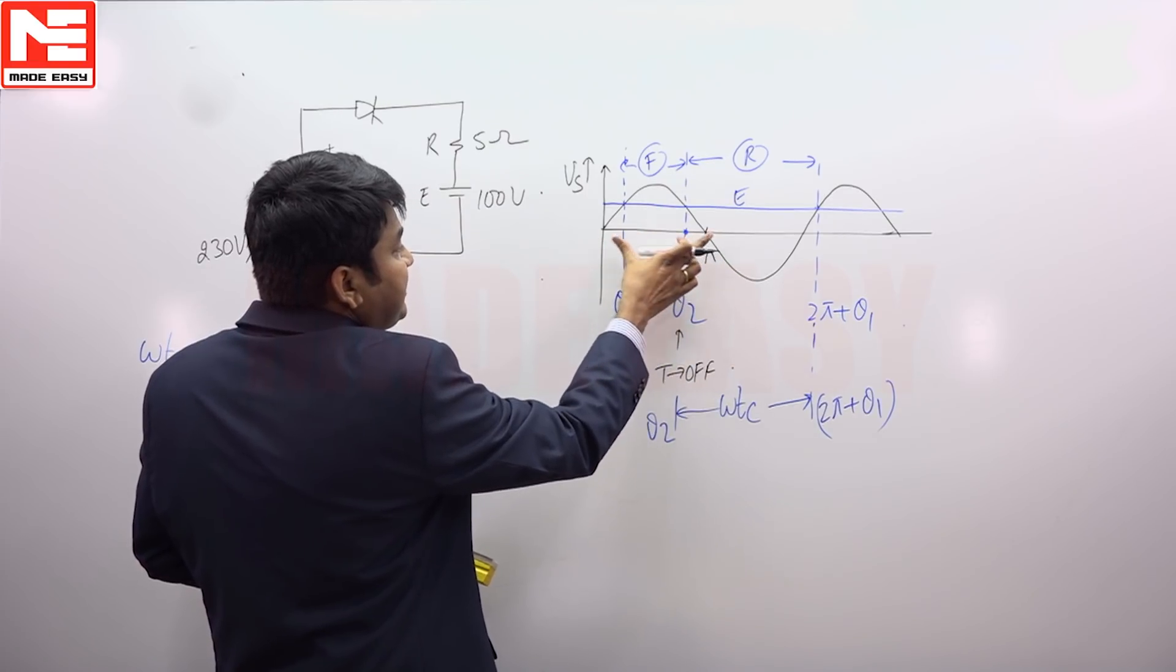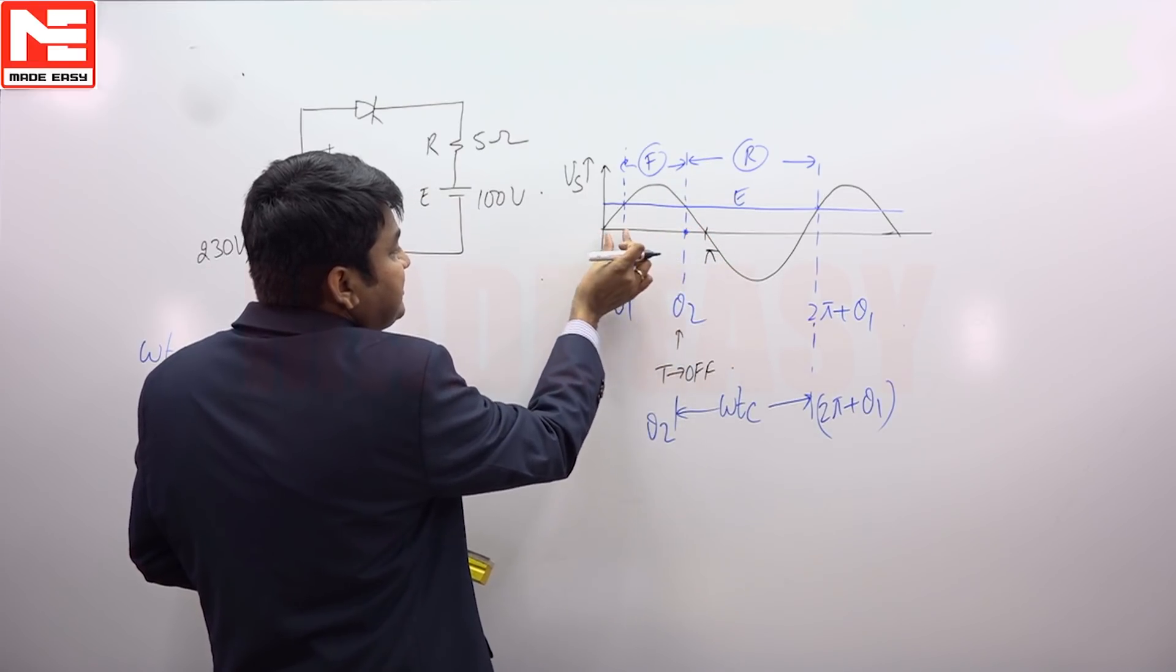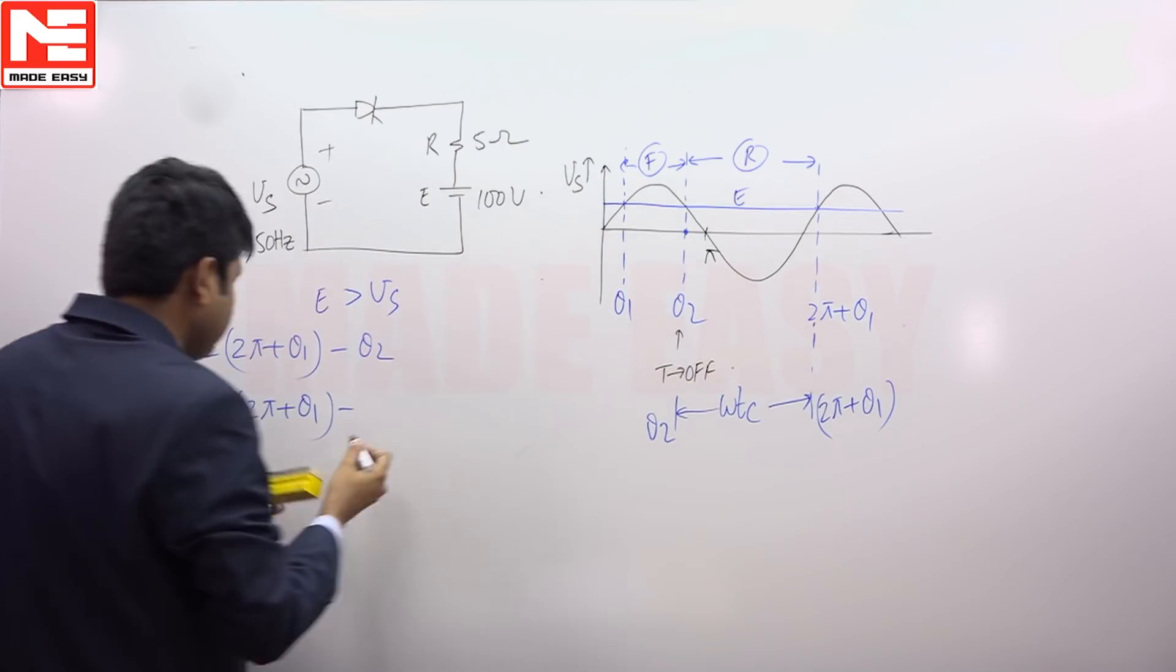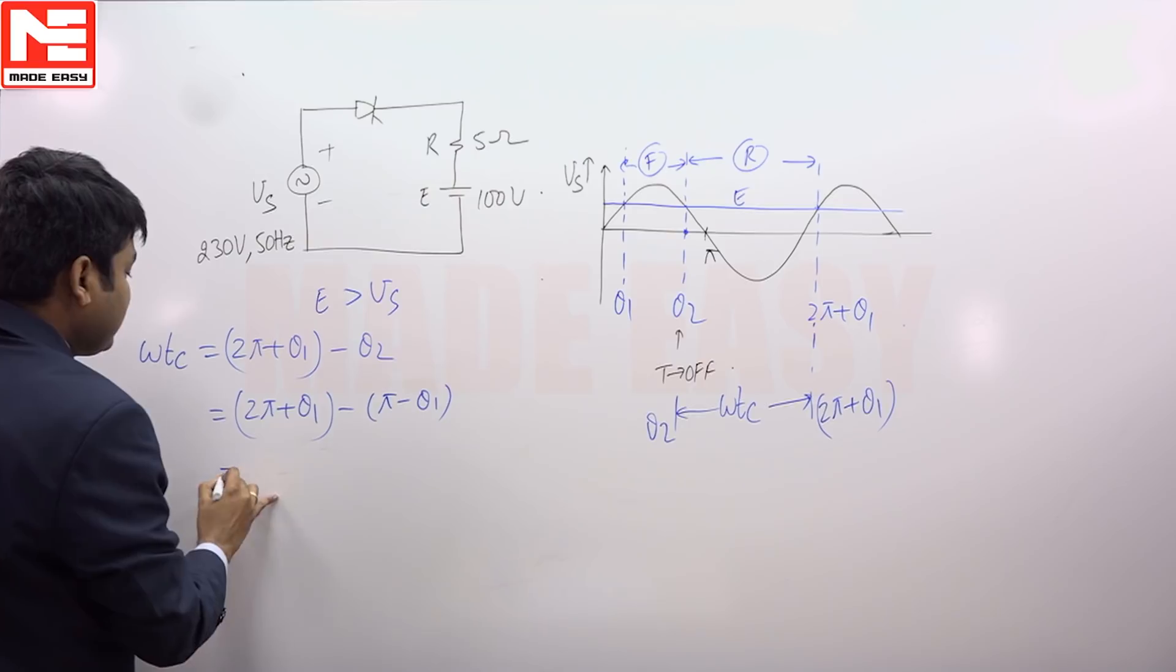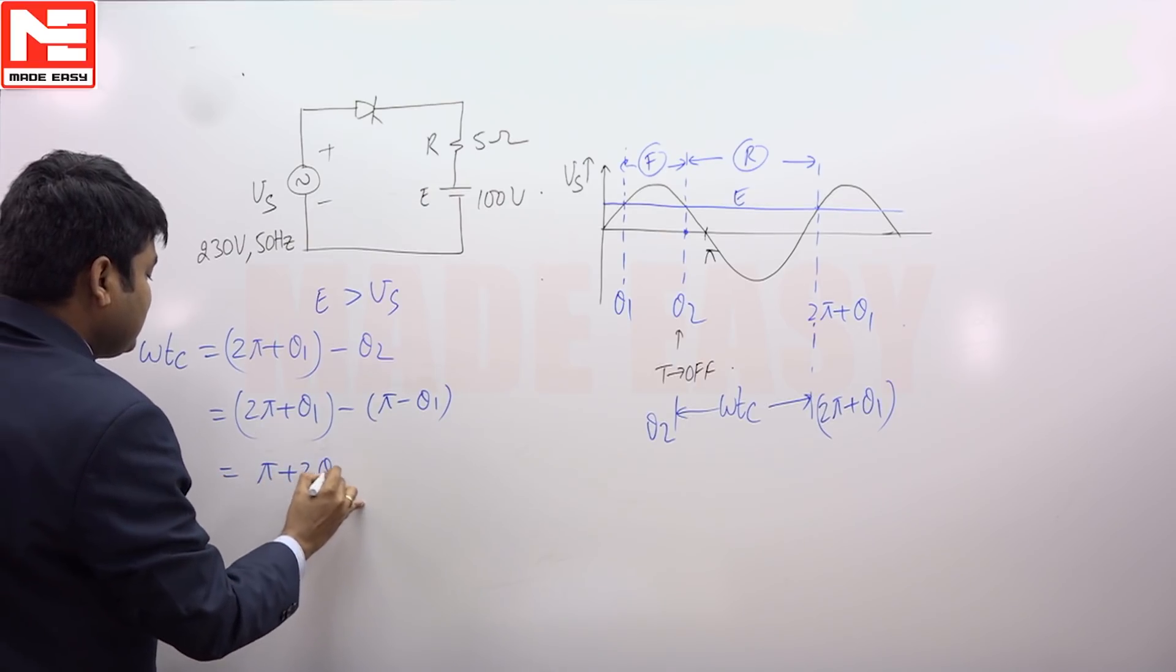So theta 2 is pi minus, pi minus theta 1. This value is theta 1. So it is pi minus theta 1. So from this, you can write pi plus 2 theta 1.